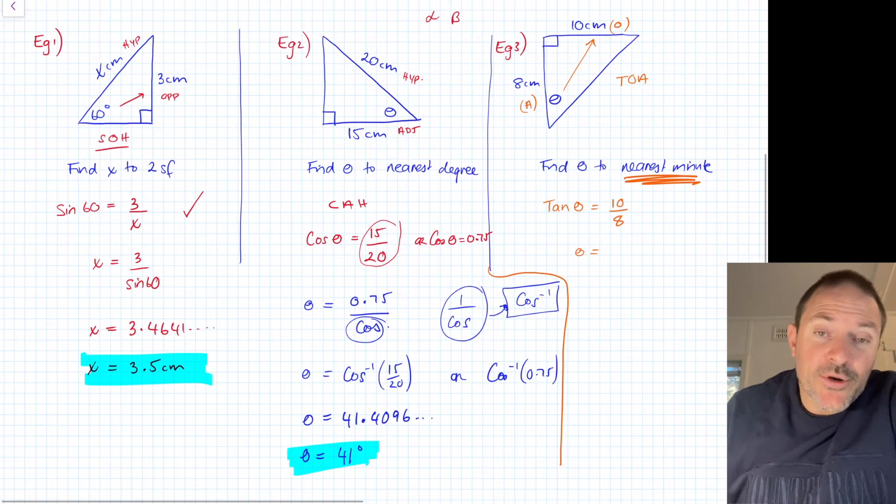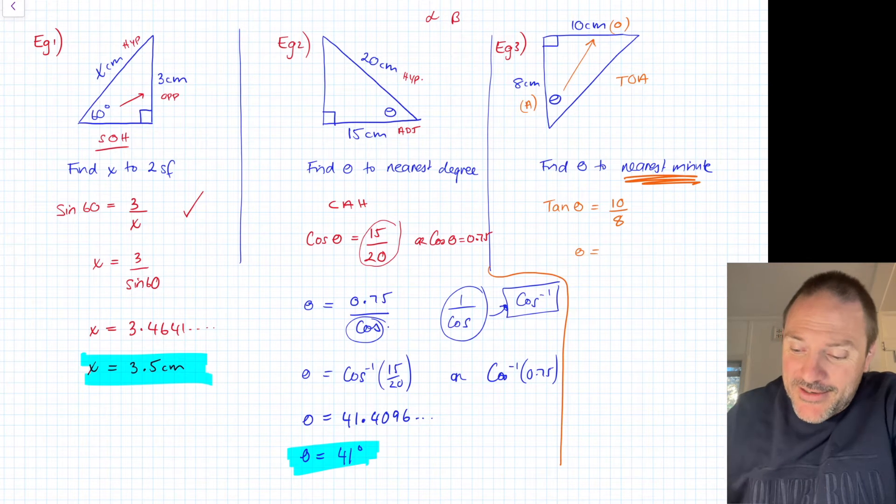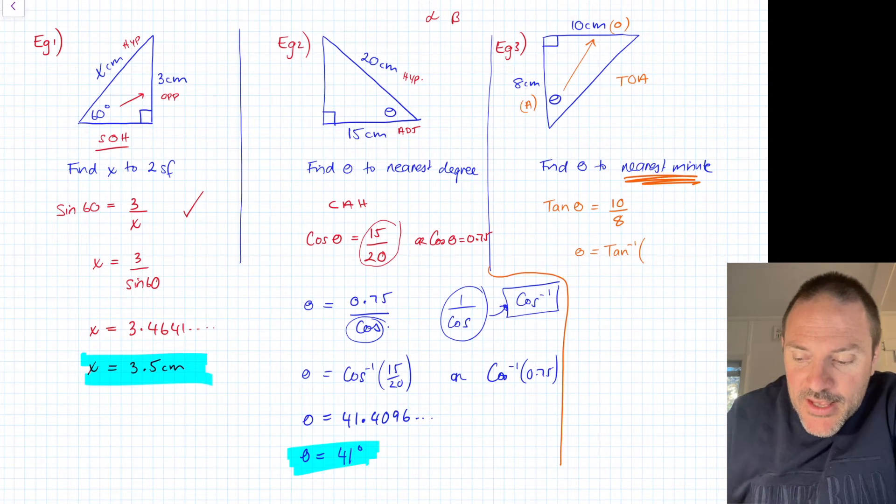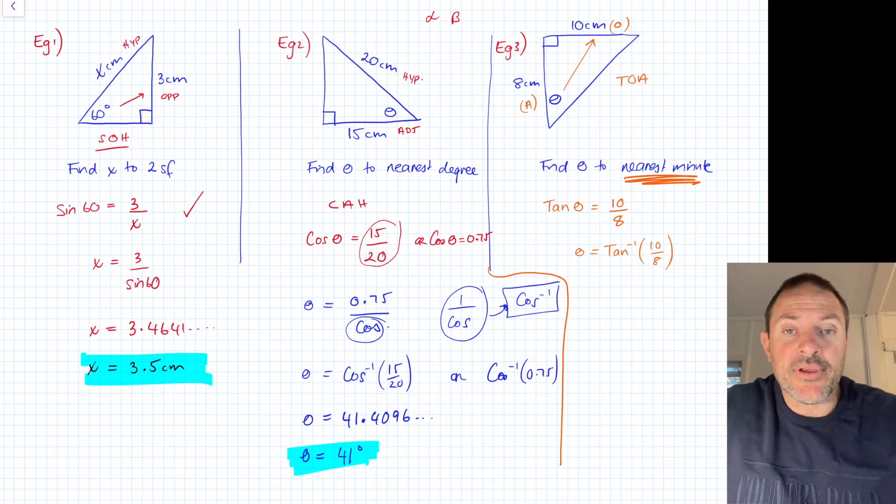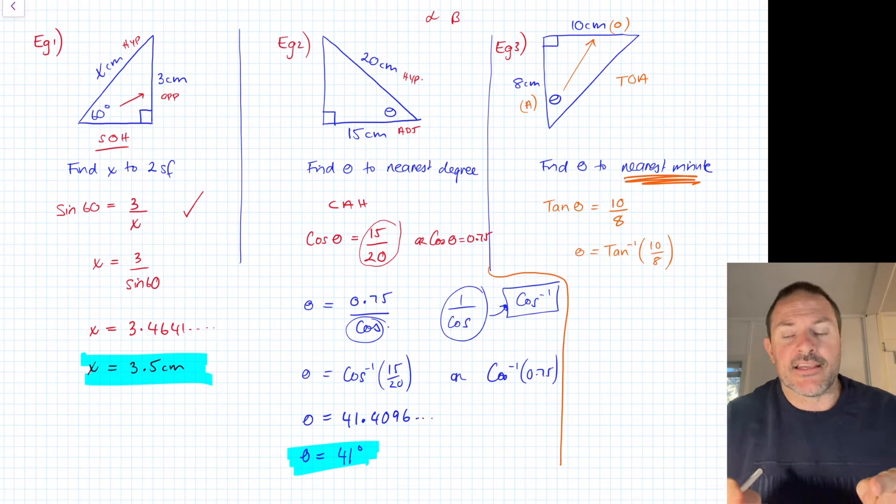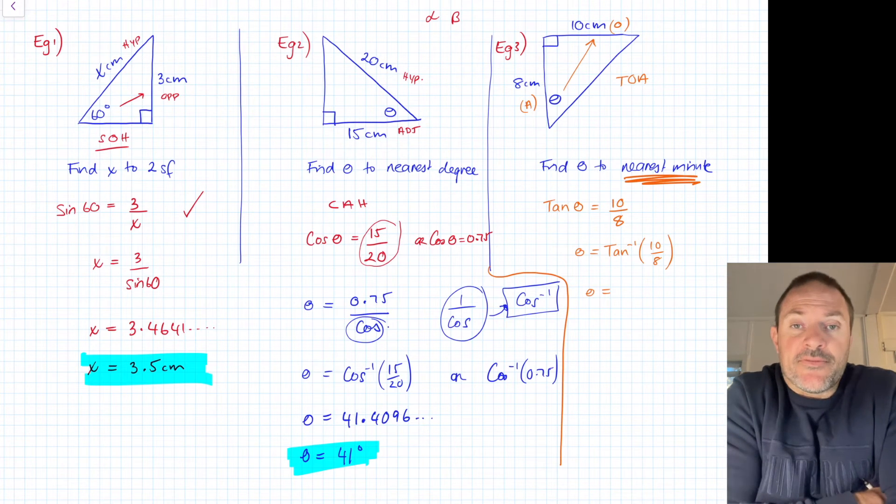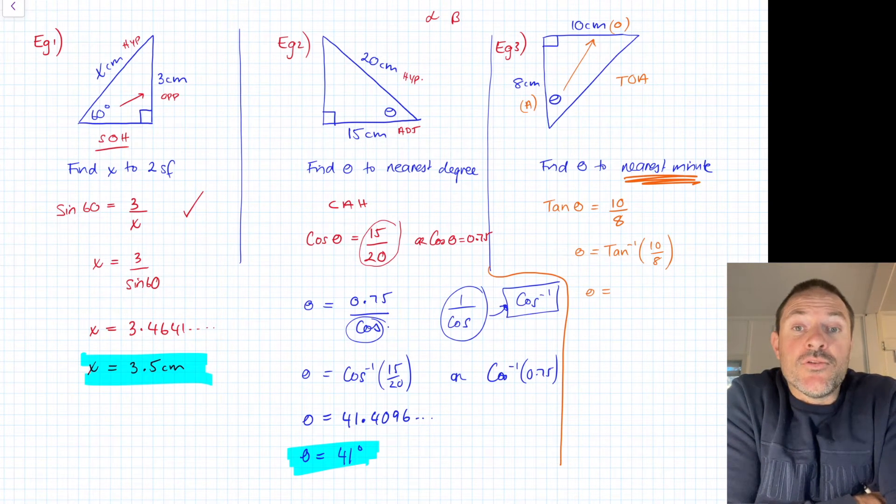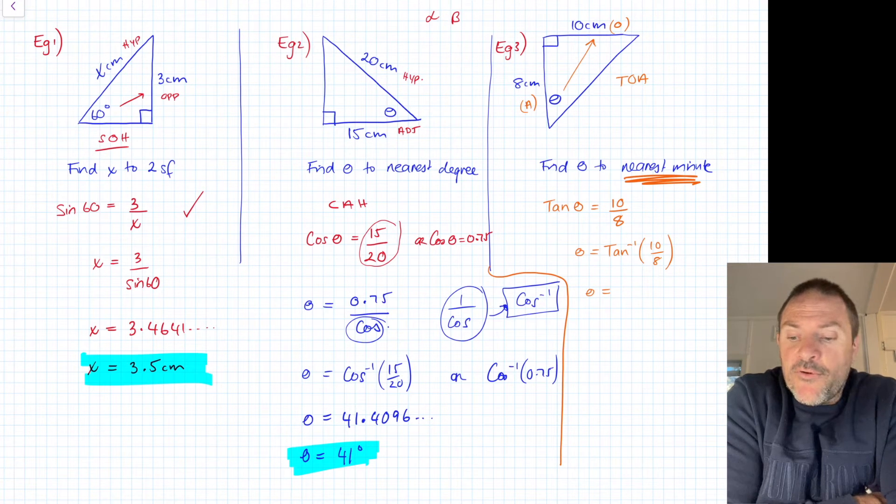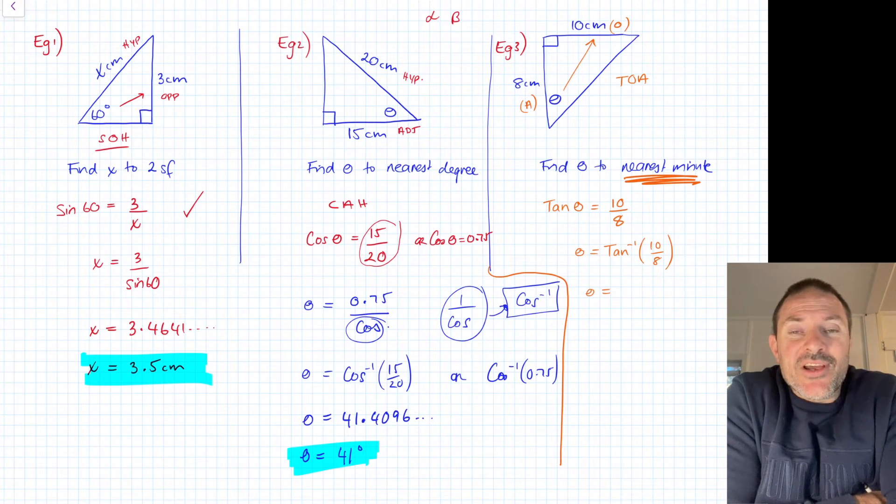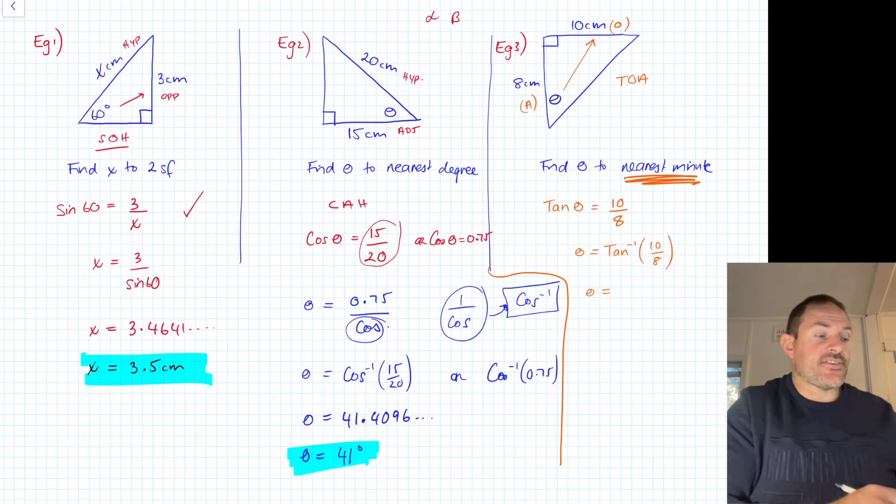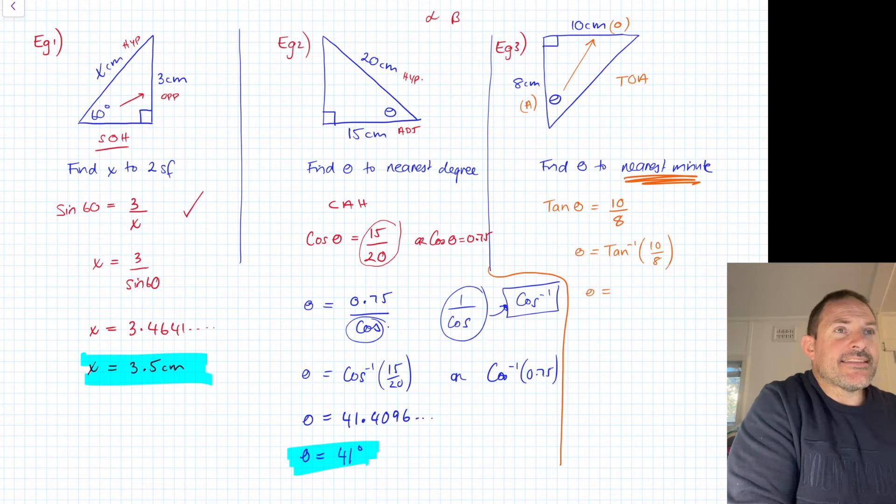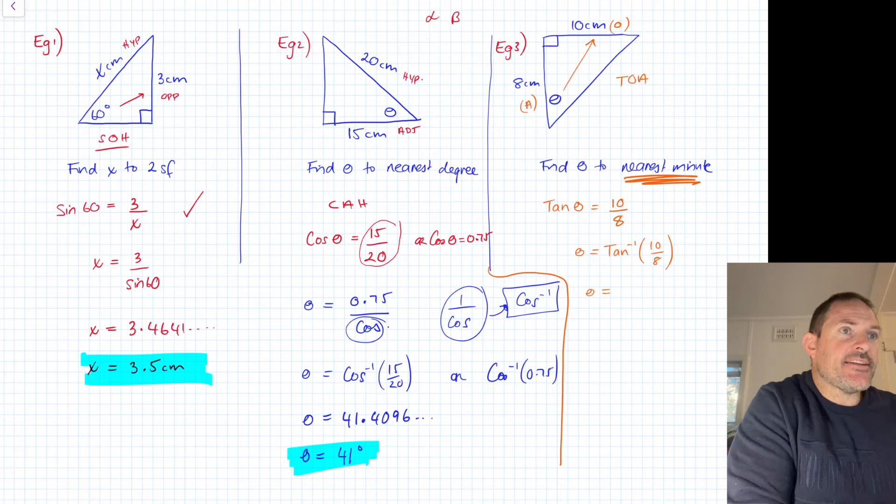I'm going to say I want to find out what theta is, so I'm going to divide by tan, but we can't do that. So I'm going to say tan negative 1 of 10 over 8. I think it's really important to actually write in the tan negative 1 there, the sine or the cos negative 1, because it helps you to remember that you're pressing your shift. So let's do it now: shift, tan, and I'm going to do 10 over 8.